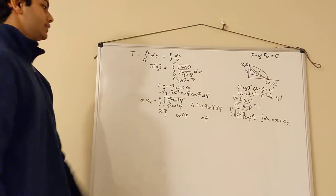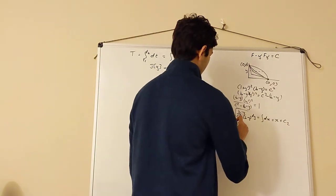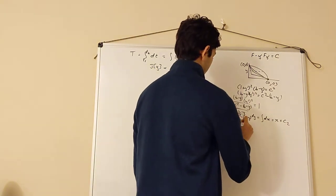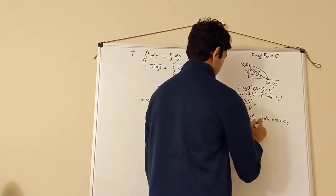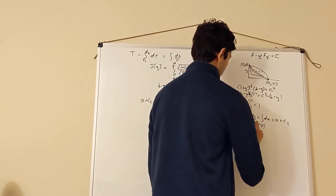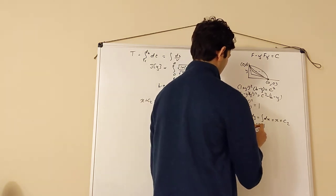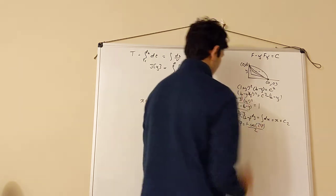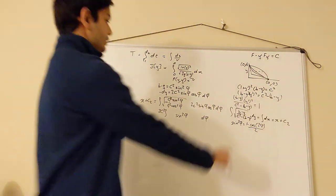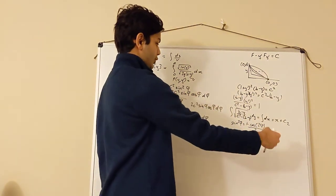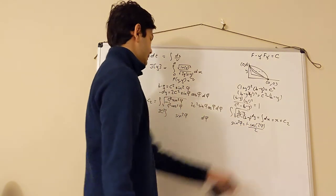To integrate sin²φ, use the trig identity: sin²φ = (1 − cos 2φ)/2. This comes from cos 2φ = 1 − 2sin²φ, rearranged. So this becomes 2c² times the integral of (1 − cos 2φ)/2 dφ.